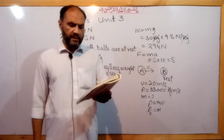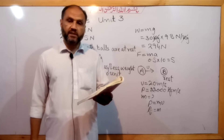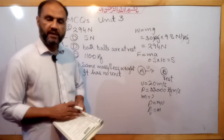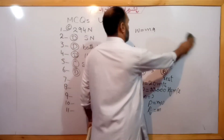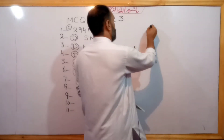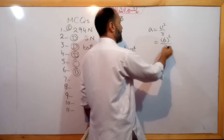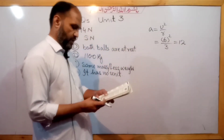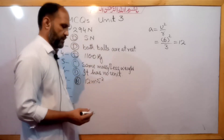Question number 7. The centripetal acceleration for an object of mass 1 kg moving at 6 m/s in a circle of radius 3 m. Centripetal acceleration = v²/R = 6² ÷ 3 = 36 ÷ 3 = 12 m/s². The answer is option B: 12 m/s².